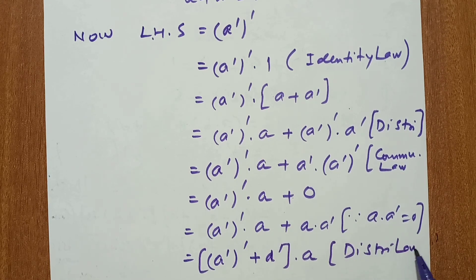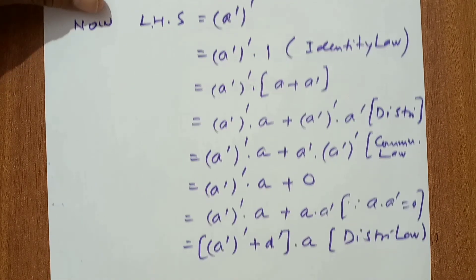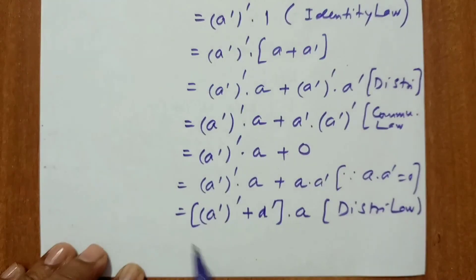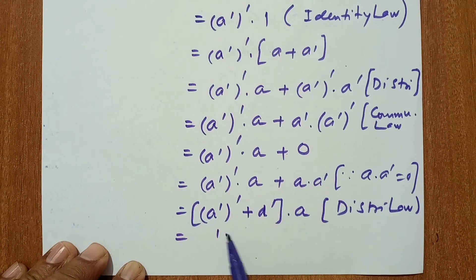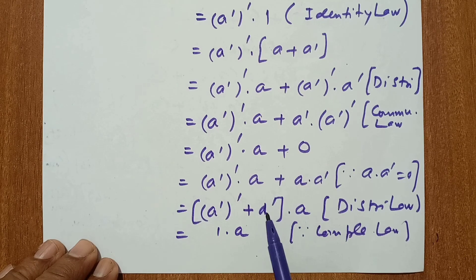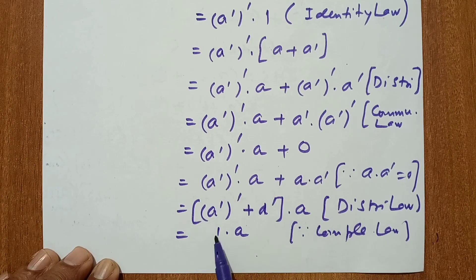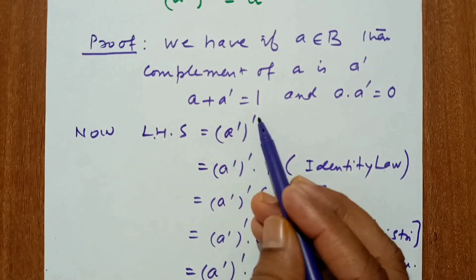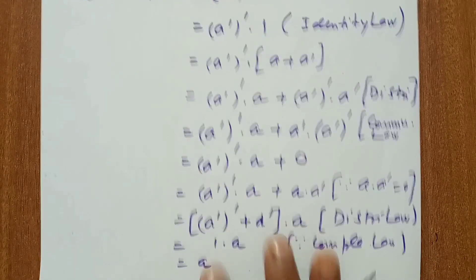By distributive law, a is distributed to each term. Now, a'' + a = a + a'' and by complementary law x + x' = 1, so a + a' = 1, giving us 1 · a = a by identity law. Since a' + a'' = 1 by complementary law applied to a', we get a'' · 1 = a. Therefore, a'' = a, and hence proved.